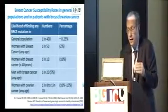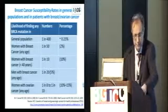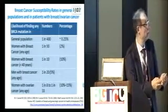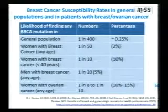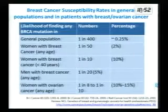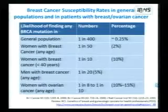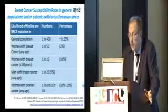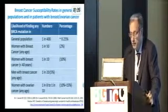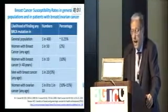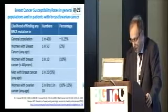Looking at the rates in breast and ovarian cancer patients: in the general population, about 1 in 400 to 1 in 500. In women with breast cancer at any age, 1 in 50 — about 2%. In women with breast cancer below age 40, the rate is estimated at about 10%. Men with breast cancer at any age, about 5% may carry a mutation. Women with ovarian cancer at any age, about 10 to 15% may have a BRCA mutation.